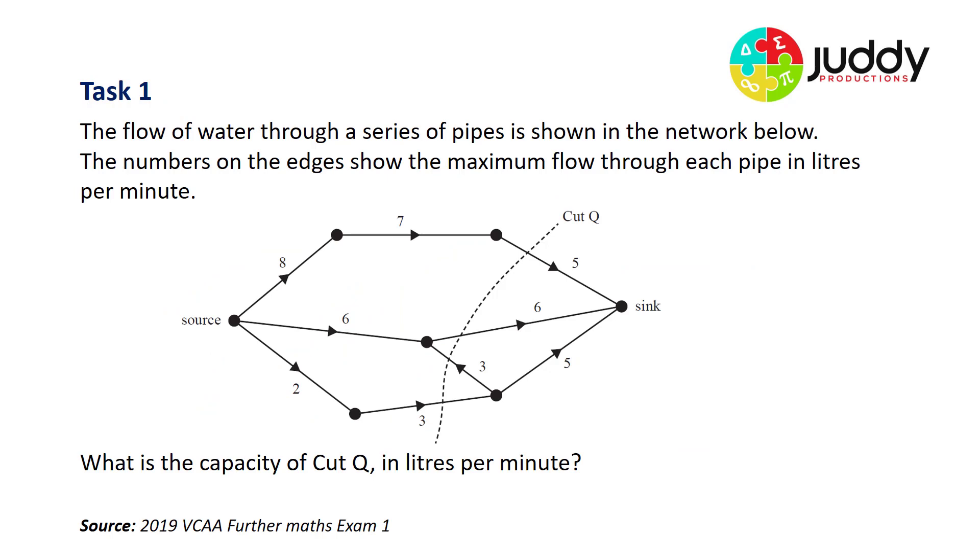Let's look at three examples from VCAA. Our first example: the flow of water through a series of pipes is shown in the network below. The numbers on the edges show the maximum flow through each pipe in litres per minute. What is the capacity of cut Q in litres per minute? Cut Q starting from the bottom and moving up to the top slices through those particular edges. This is a valid cut because it's completely chopping the source from the sink.